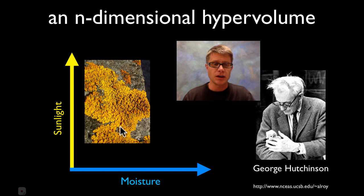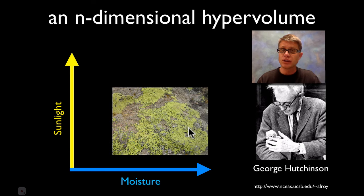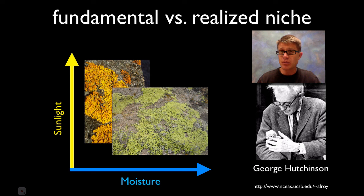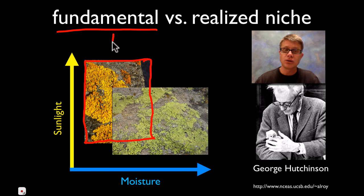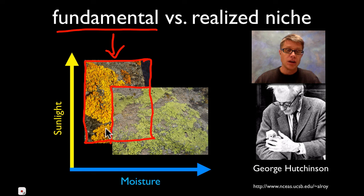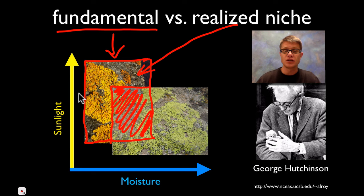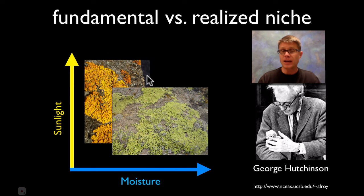Let me make this more concrete. The orange lichen likes a lot of sunlight but can't stand a lot of moisture. The green lichen likes more moisture but doesn't do well with a lot of sunlight. When both are present, we see two distinct niches. The first is the fundamental niche — where an organism could live. For the orange lichen, that's the whole available area. But when the green lichen shows up and outcompetes it, the orange lichen loses part of that area. What remains is its realized niche.